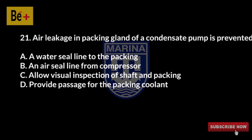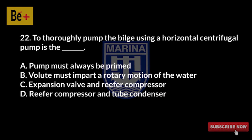Air leakage in the packing gland of a condensate pump is prevented by: A) a water seal line to the packing, B) an air seal line from compressor, C) allow visual inspection of shaft and packing, D) provide passage for the packing coolant. The answer is A, water seal line to the packing.